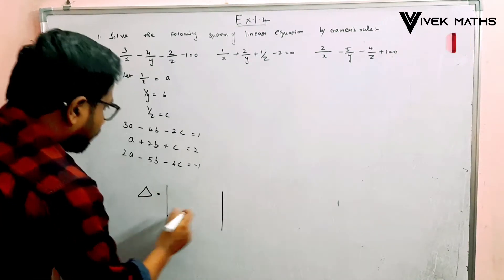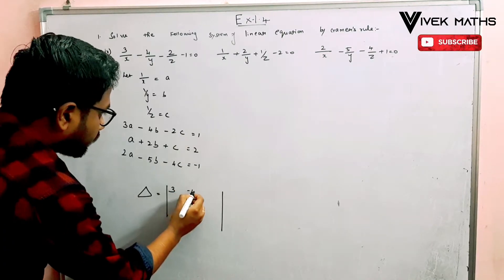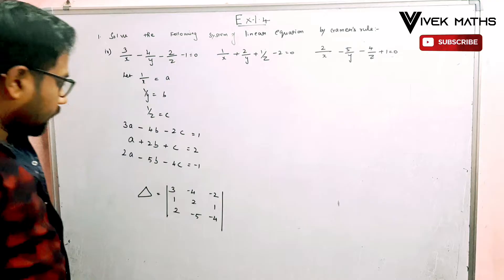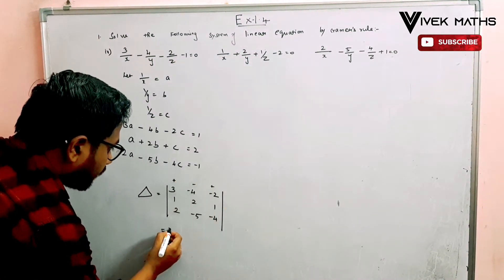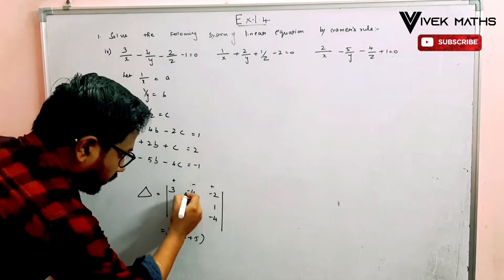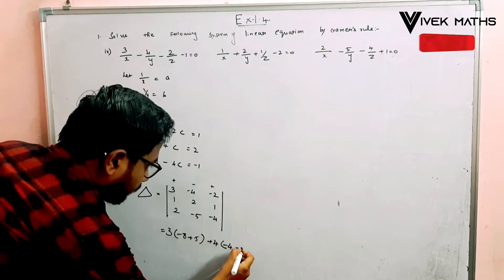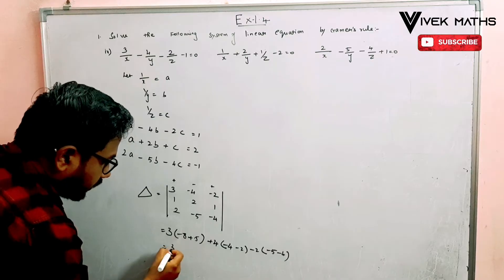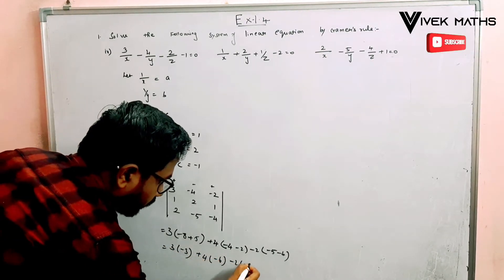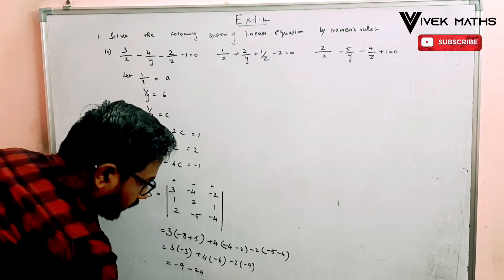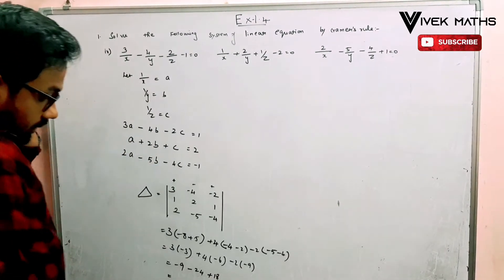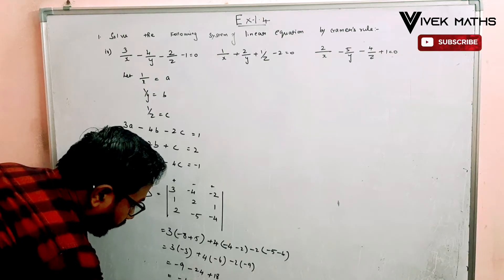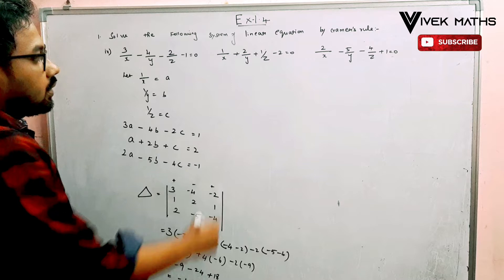Now we compute the determinant delta. Using cofactor expansion with plus, minus, plus signs: the calculation gives us minus 9 minus 24 plus 18, then minus 9 minus 24 equals minus 33, and combined gives minus 30. The result is minus 50, which is not equal to 0, so Cramer's rule applies.